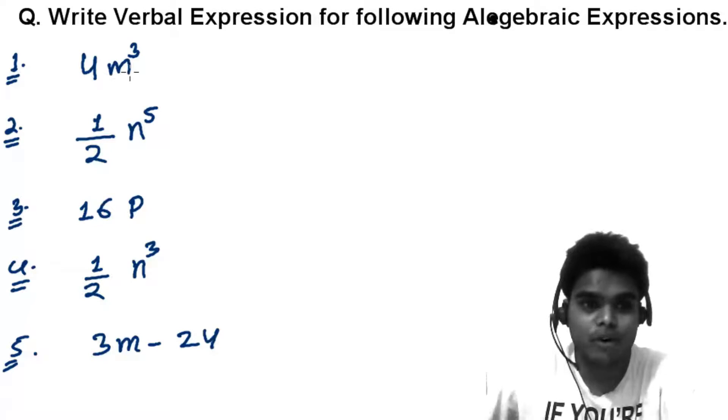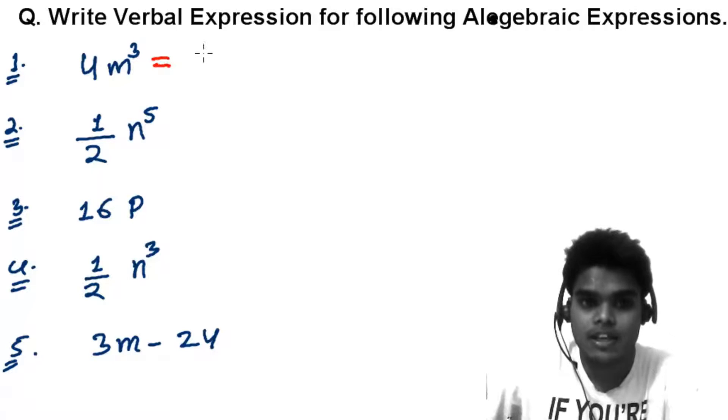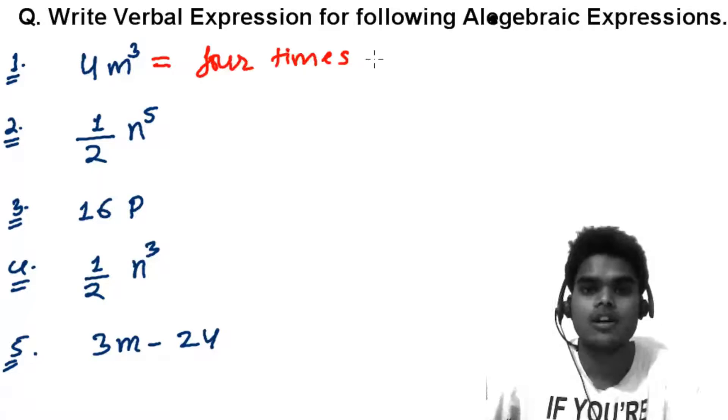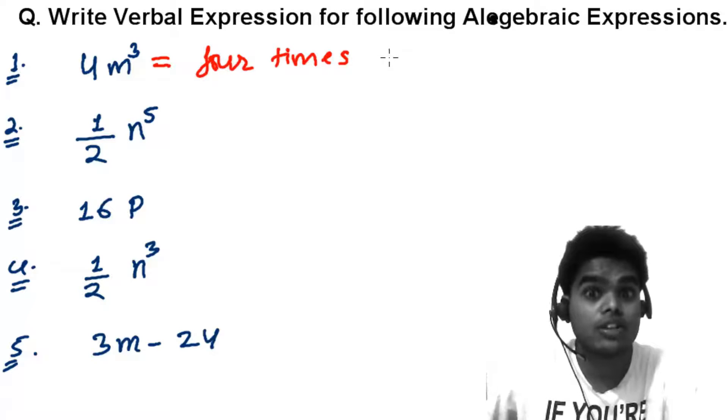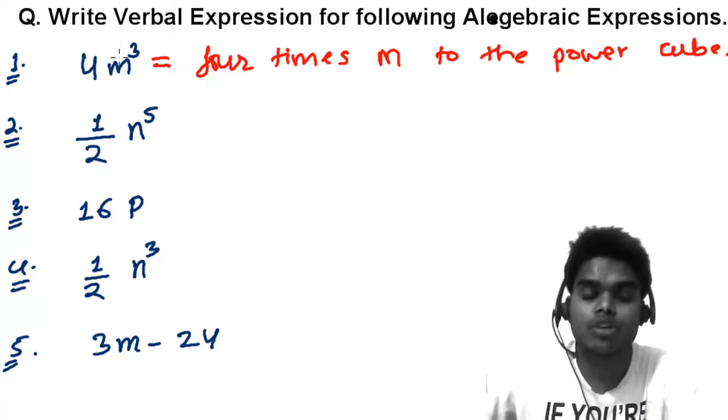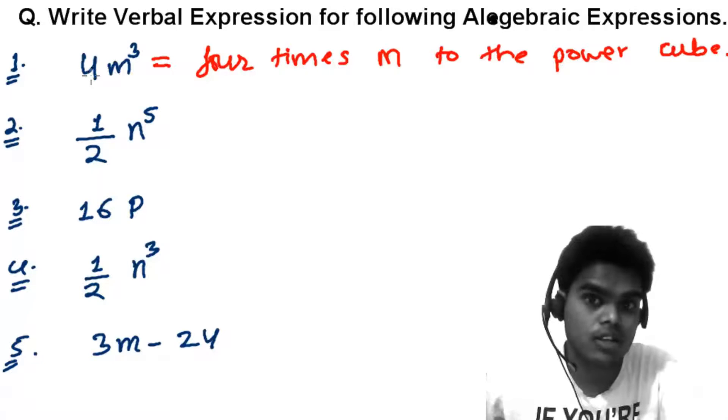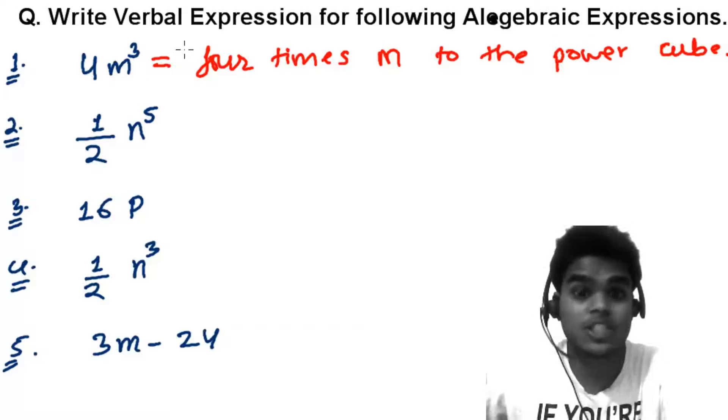So the first one is 4m to the power 3. So how am I going to write this? I will write 4 times m to the power cube. You can also write the product of m to the power 3 and 4. The product or times, that means multiplication which is here.